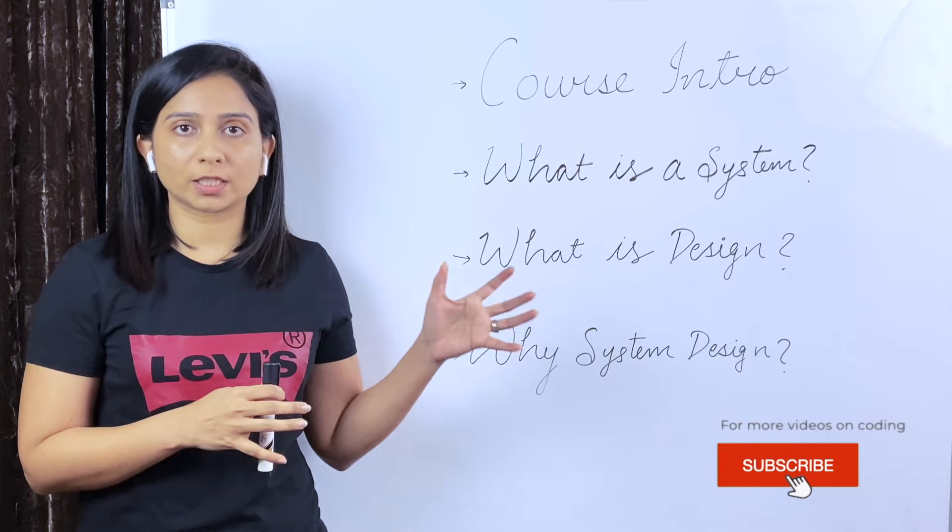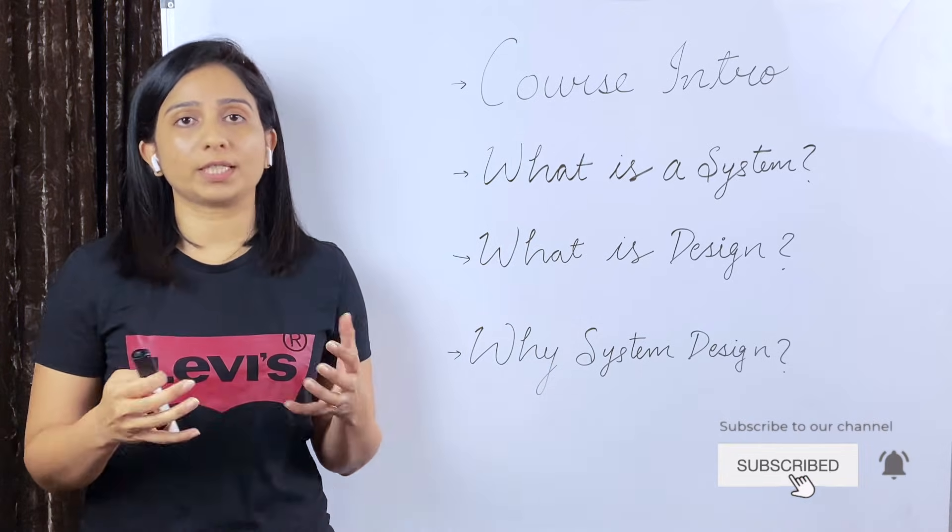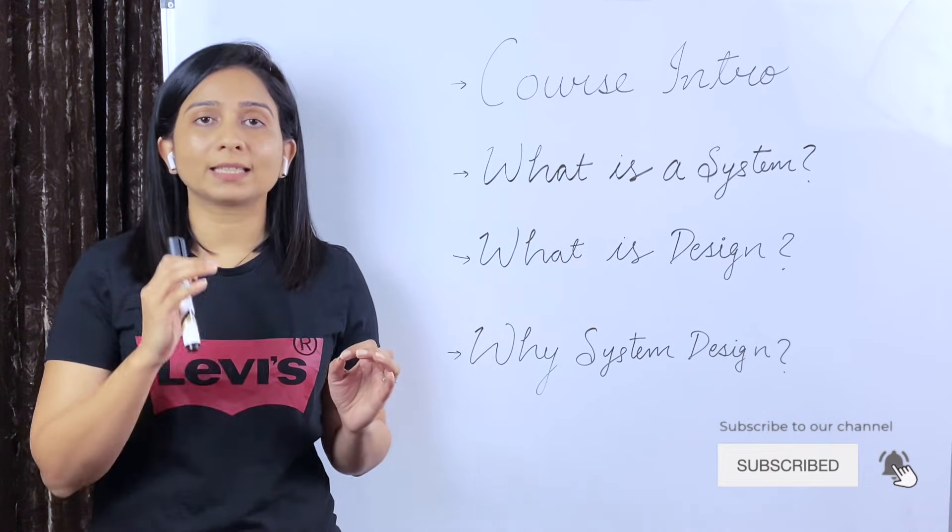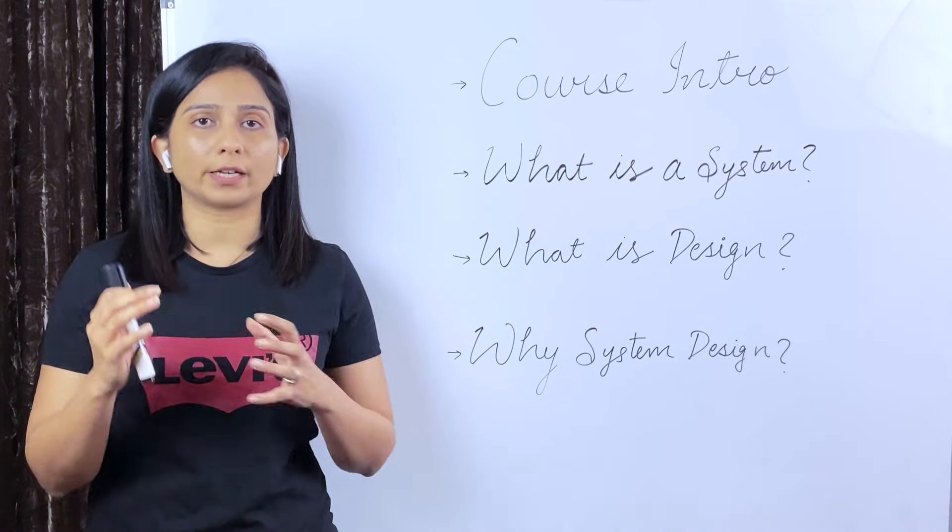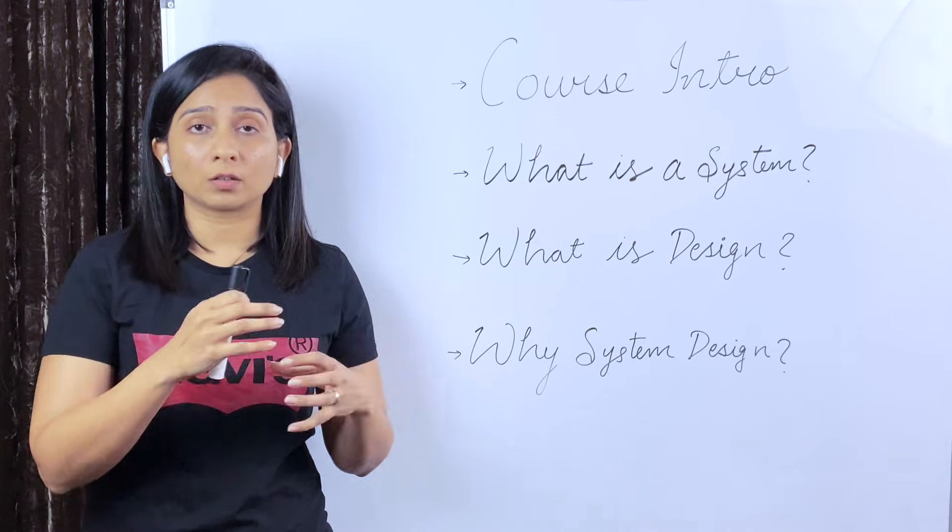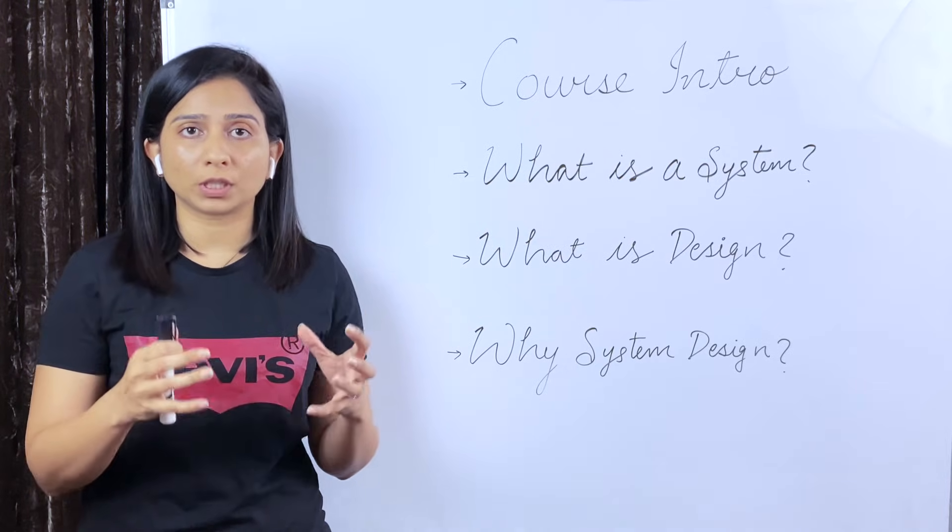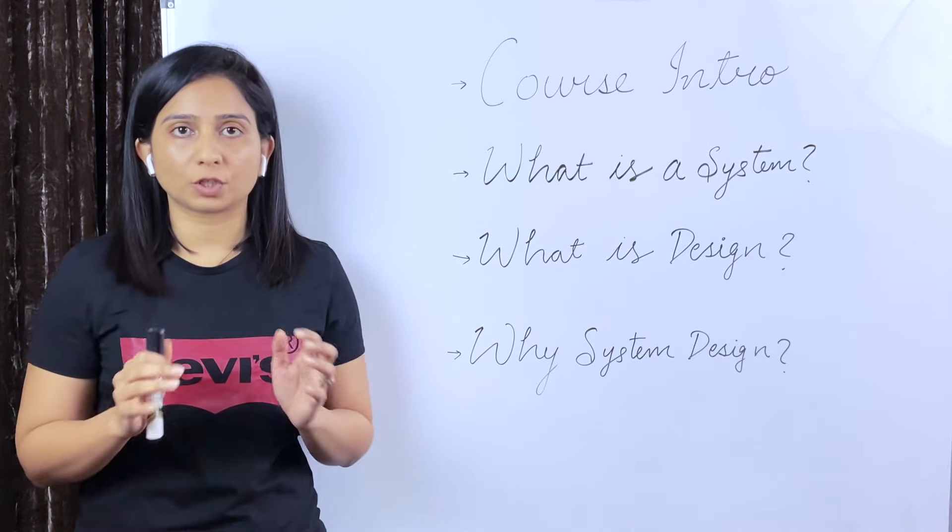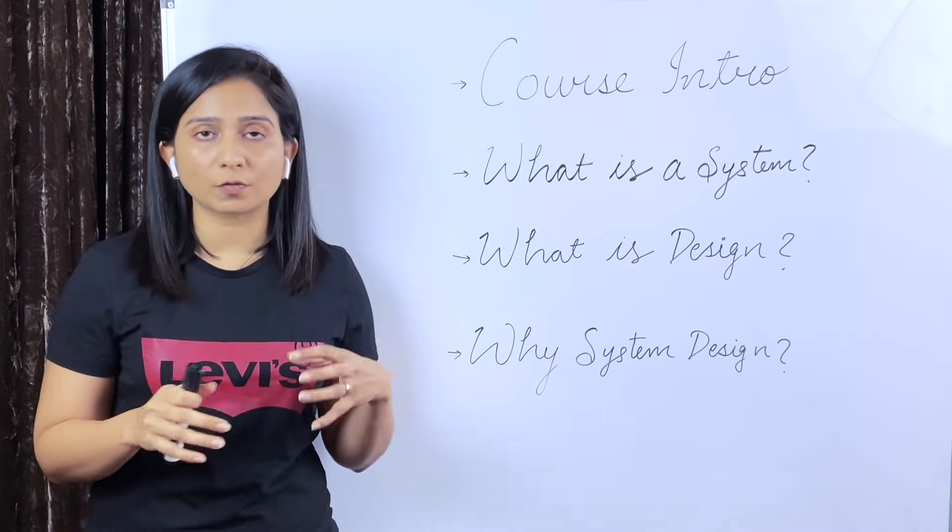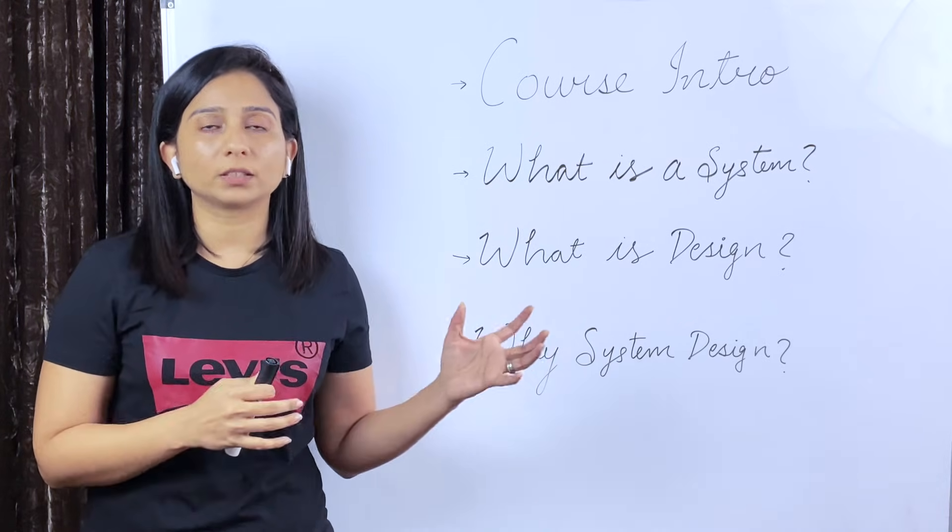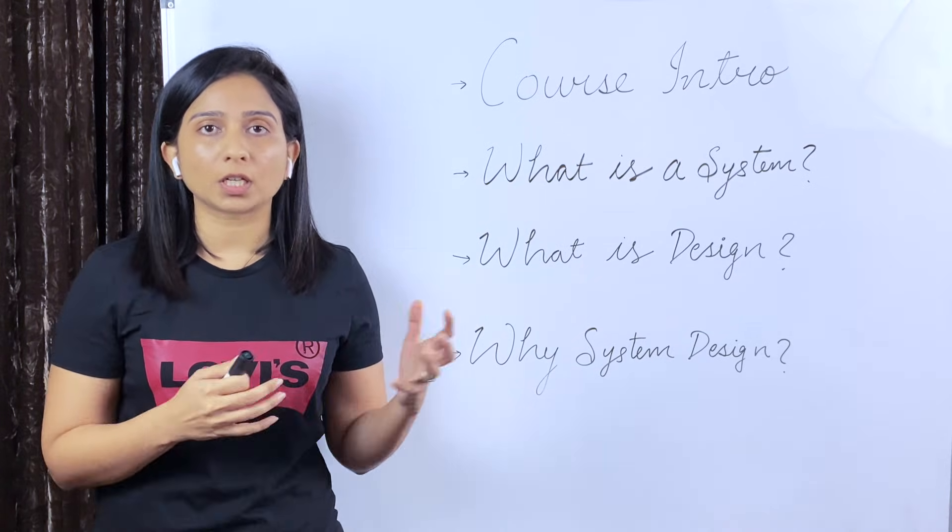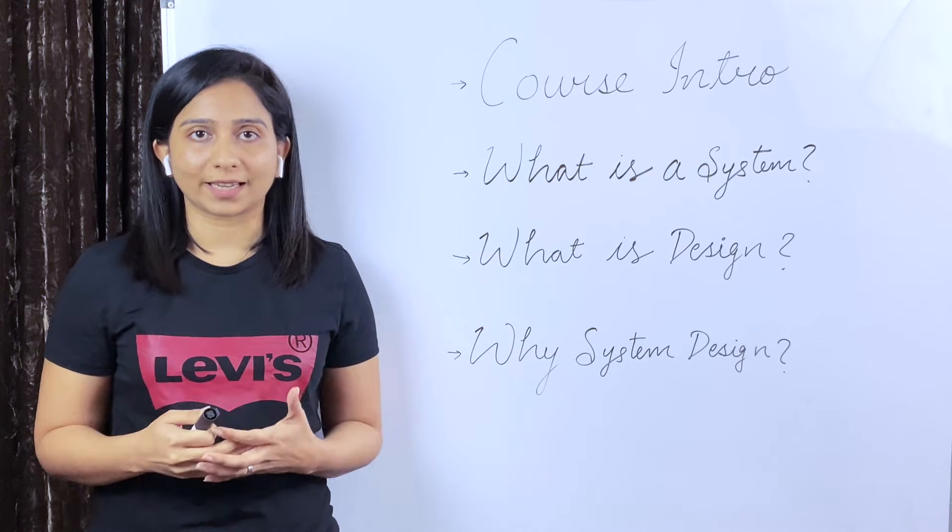Now that we understand what a system is built of, now let's understand what is design. Design is a process of understanding the user requirements and selecting the components, modules, and software technologies, how they are going to be intertwined and communicating with each other to actually serve the need of the system. That is the basic definition of design. And that whole process of selecting those components, understanding the needs of the user and the requirements, and also factoring in different constraints and concerns, that whole process entails design.